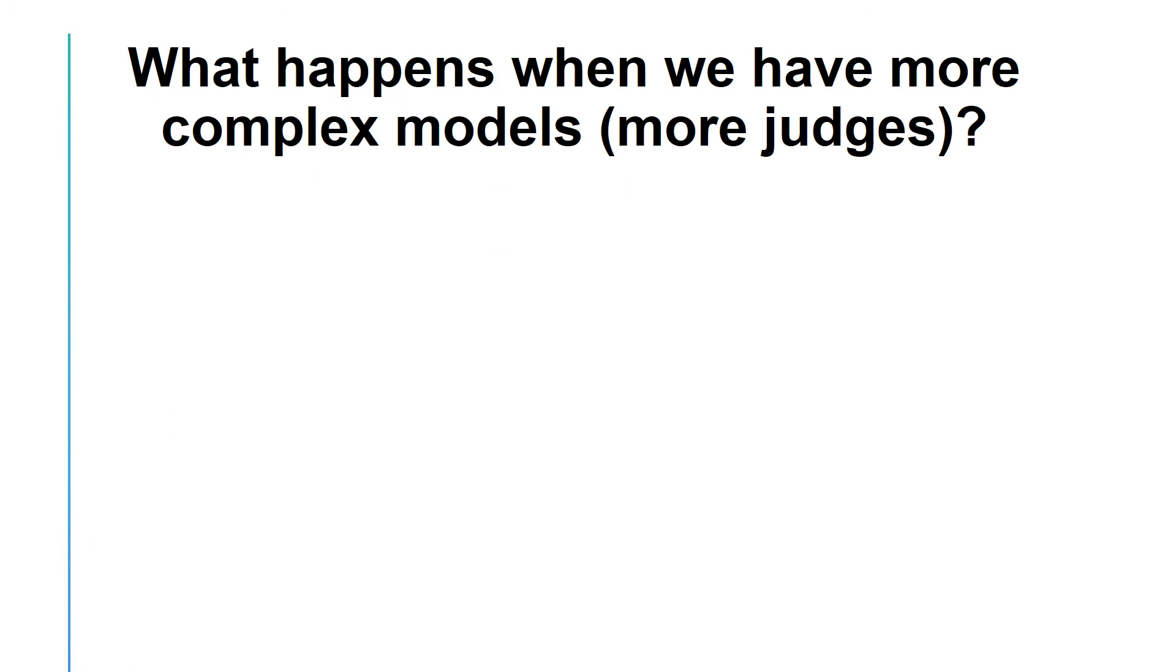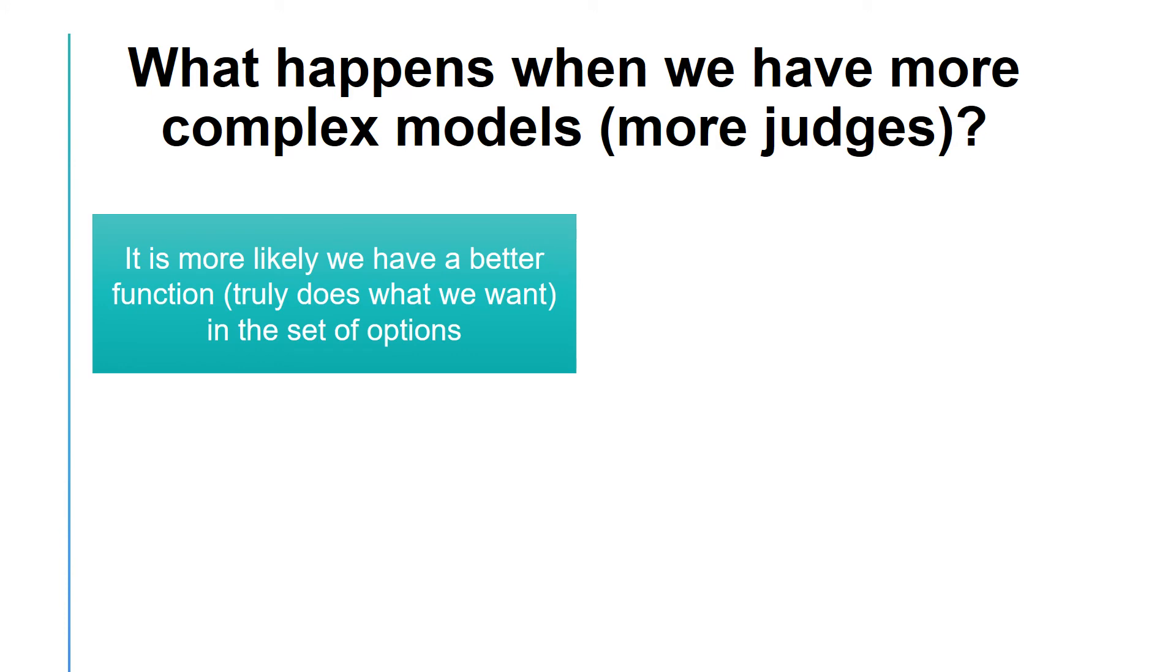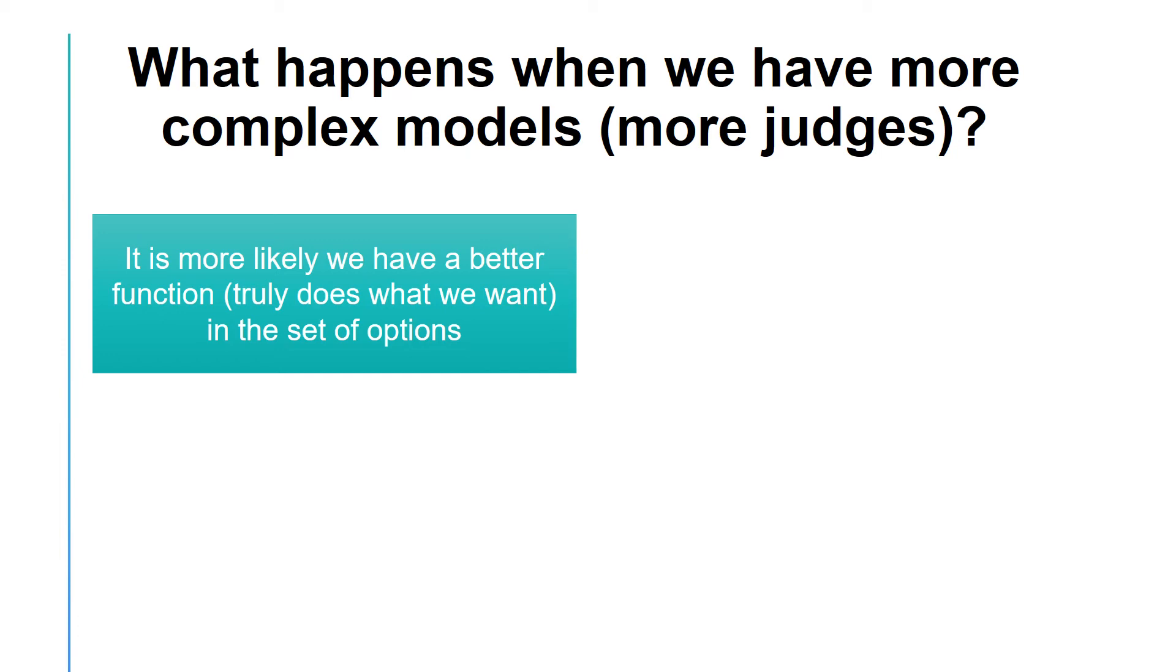When we have more complex models, two things happen. First, it is more likely that there exists a function within our model that performs well and truly does what you want it to do. Second, it is more likely that you observe other bad functions within the model that just by chance give you good results on the training data. In the training phase, you might end up choosing one of those bad functions. And this is what happens when overfitting occurs.